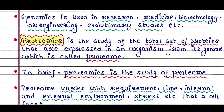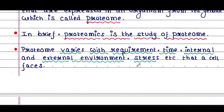Proteomics is the study of the total set of proteins that are expressed in an organism from its genome, which is called the proteome. In brief, proteomics is the study of proteome. Proteome varies with requirement, time, internal and external environment, stress, etc. that a cell faces.